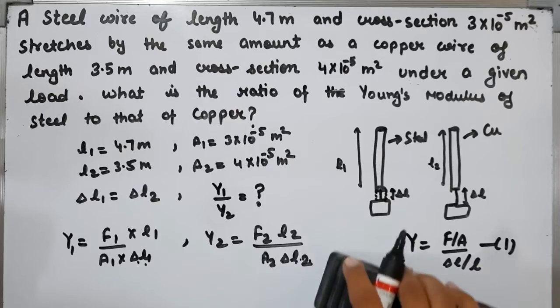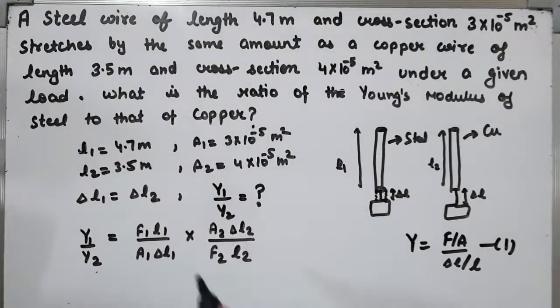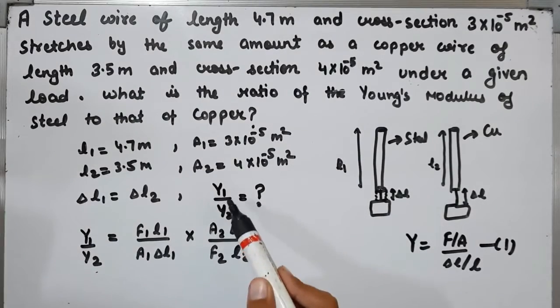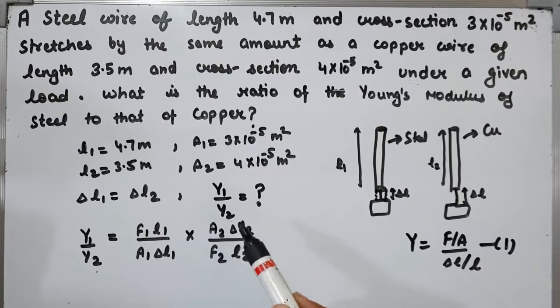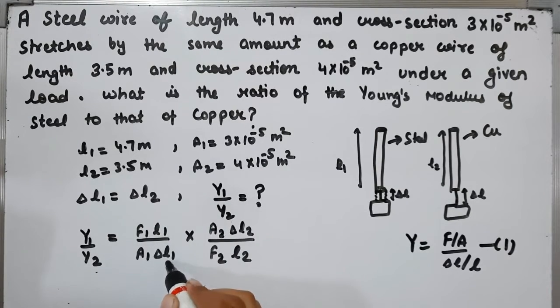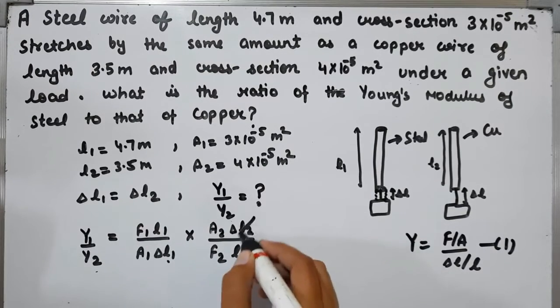Dividing these equations gives us Y1/Y2. Since ΔL1 = ΔL2, this directly cancels out from the equation.